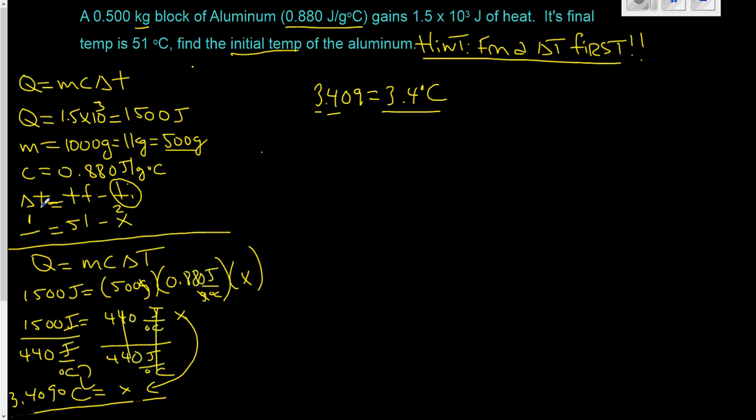And we're going to take this formula, now here's just an extra little step. Delta T is equal to temperature final minus temperature initial. So this 3.4, that's our delta T. We found 3.4 based on our three other variables here. So we're going to plug that in here. So we know that whatever happened here, there was a change in temperature of 3.4 degrees Celsius. We know that the final temperature was 51 degrees Celsius.